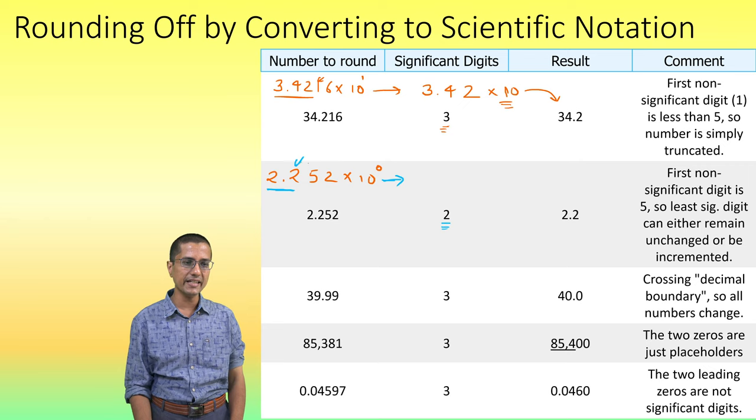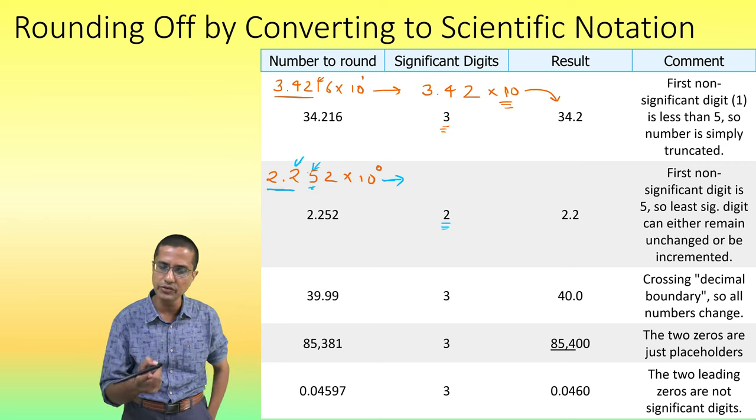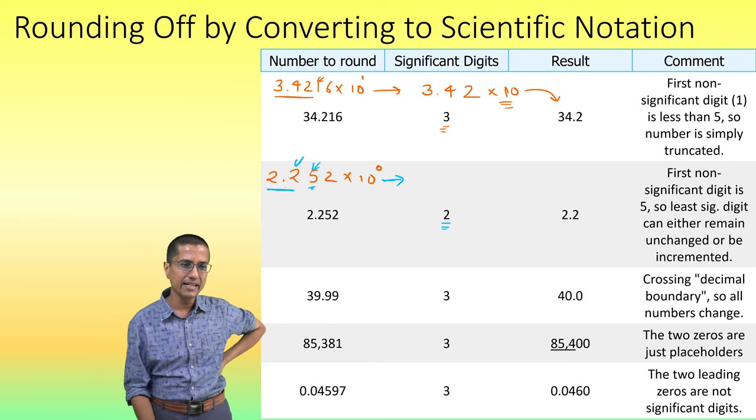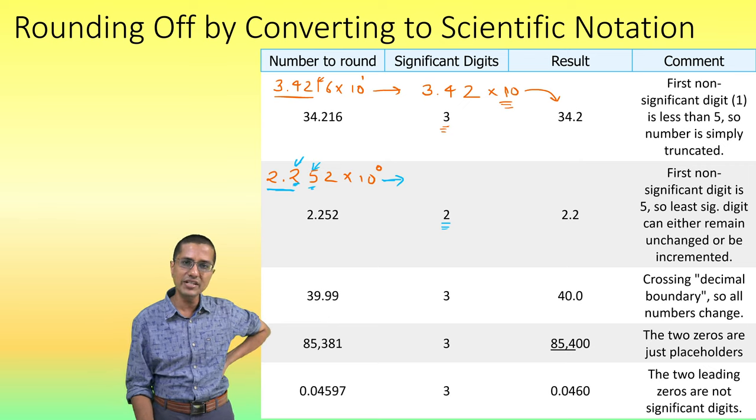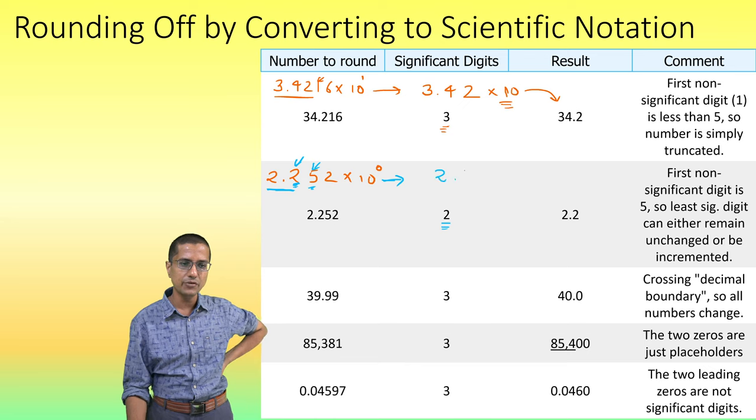Now, because this is even and this is a 5, right? So this is a 5. The first digit that we are throwing up is a 5. And the first digit we are keeping, the last digit that we are keeping is actually even. I do not really have to do anything. So, my answer becomes 2.2 × 10⁰.